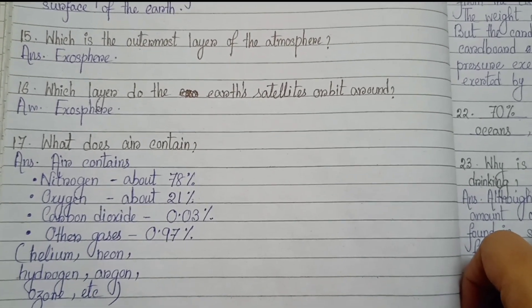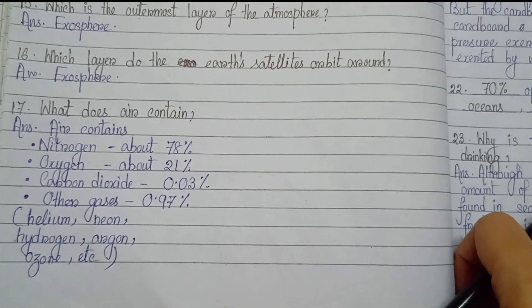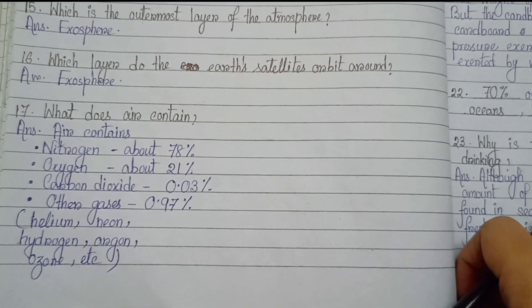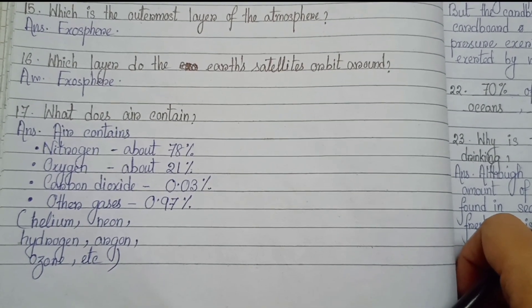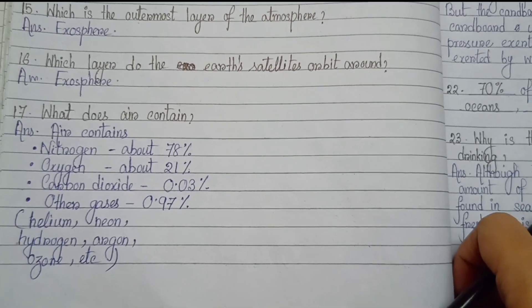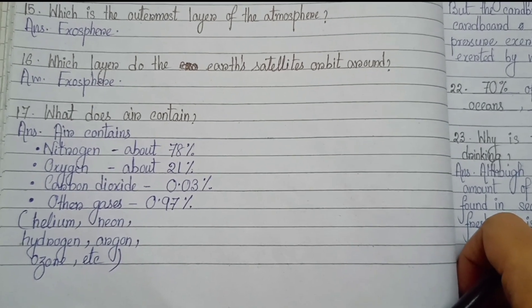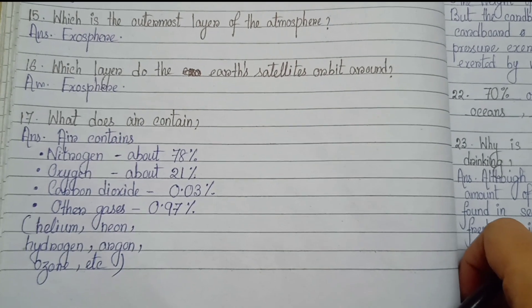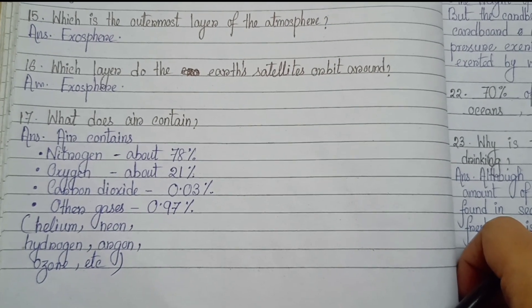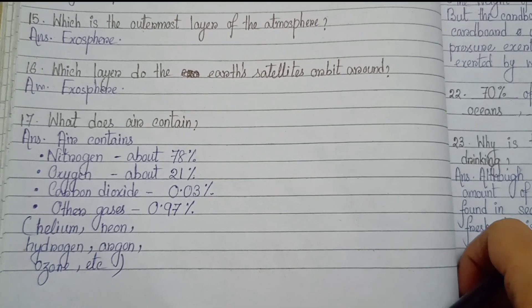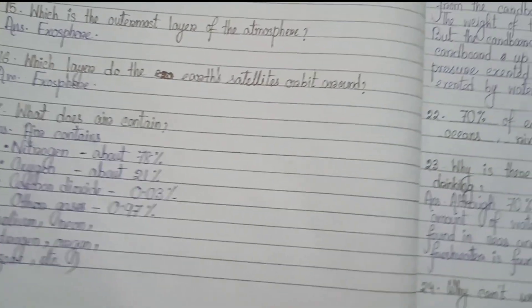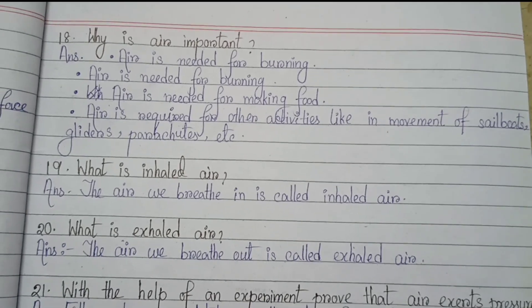Number 15: Which is the outermost layer of the atmosphere? Exosphere. Number 16: Which layer do the earth's satellites orbit around? Exosphere. Number 17: What does air contain? Air contains nitrogen about 78%, oxygen about 21%, carbon dioxide 0.03%, and other gases that means helium, neon, hydrogen, argon, ozone etc. — 0.97%.